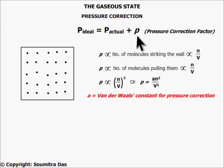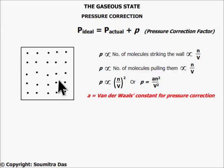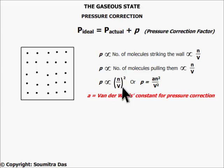The pressure correction factor depends on the number of molecules striking the wall, which is in turn dependent on the number of moles per unit volume, that is n/V. It also depends on the number of molecules just behind, pulling the molecules that are striking the walls — these also depend on n/V. Therefore, the pressure correction is proportional to the square of the molar density, n/V. So the pressure correction is given by A·n²/V², where A is the proportionality constant known as the van der Waals constant for pressure correction.